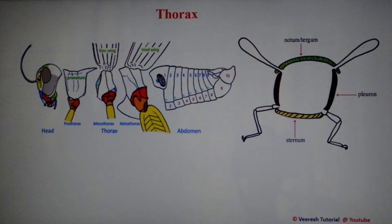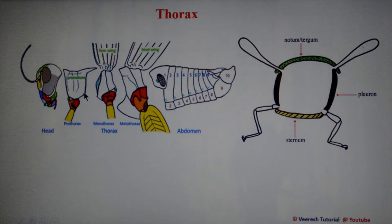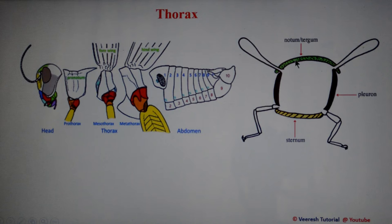The thorax is the second tagma and consists of the locomotory organs. It is differentiated into the prothorax, mesothorax, and metathorax. Three pairs of legs are present — one pair on each thoracic segment — whereas two pairs of wings are present on the meso- and metathoracic segments, which is why these are collectively called the pterothorax. Spiracles are also present laterally on the meso- and metathoracic segments.